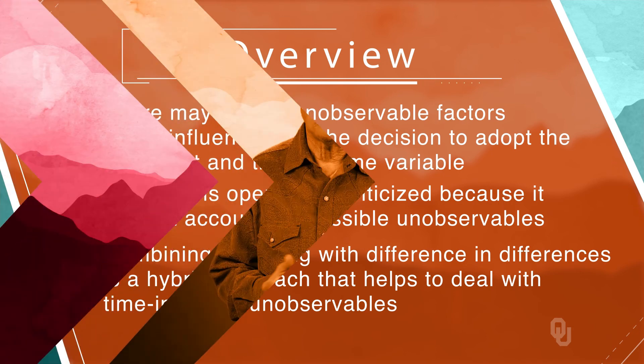That is, we could take our treated units and matched controls, and instead of just taking the difference between them as the treatment effect, we could calculate the difference between them before treatment, the difference after treatment, and take the difference between those differences as our estimated treatment effect. Another way to say this is we could use matching to create the control group for a difference-in-differences analysis, like we discussed in the previous module of the course.